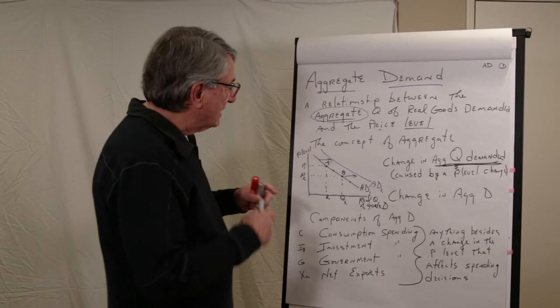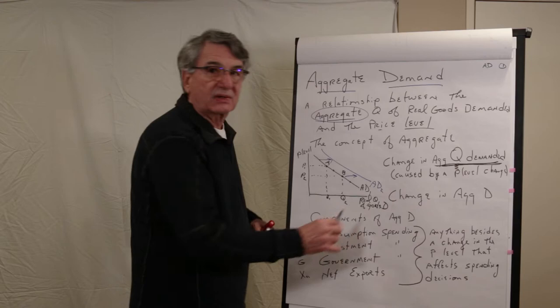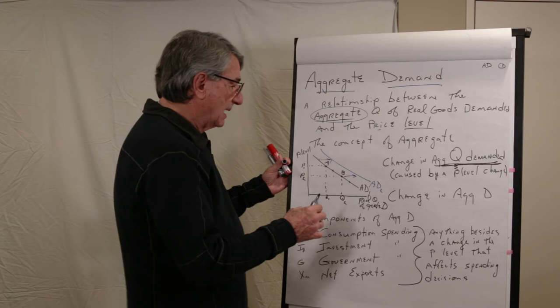Well, it has to be something besides a change in the price level. We have a relationship between price level and real goods demanded, assuming everything else that will affect consumers' decisions about demanding things is held constant. So what are all of these constants? And the answer is there's a lot of them.